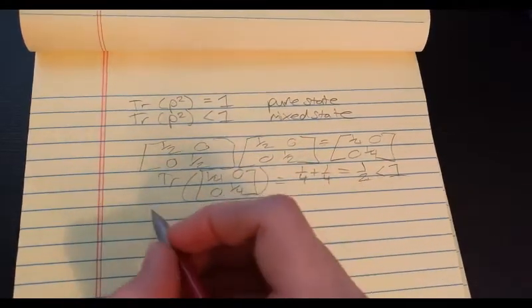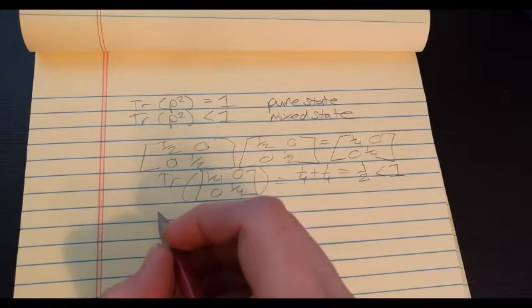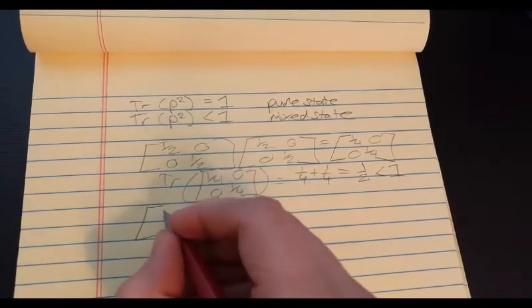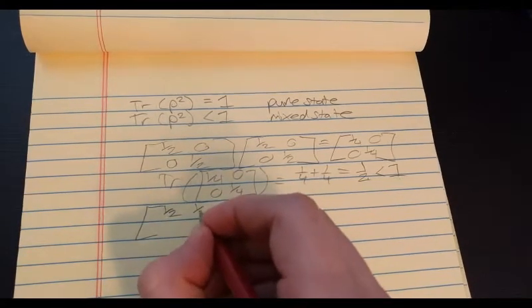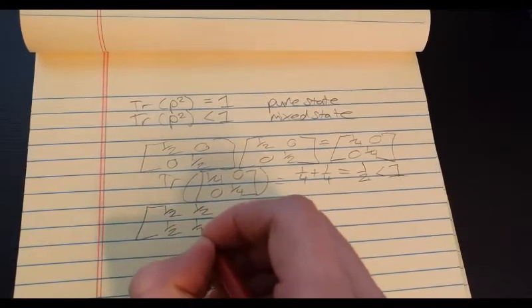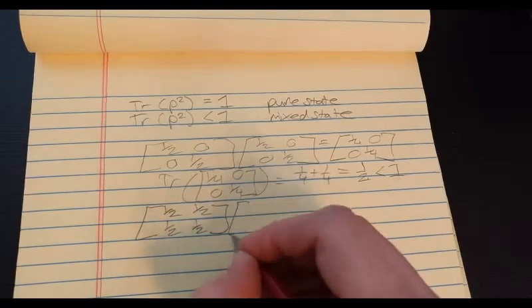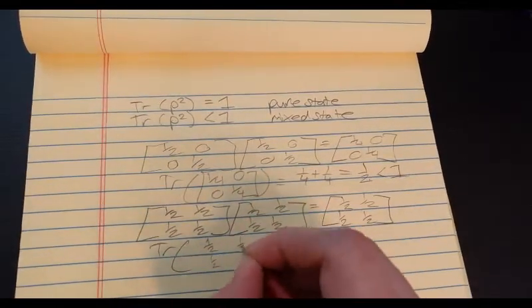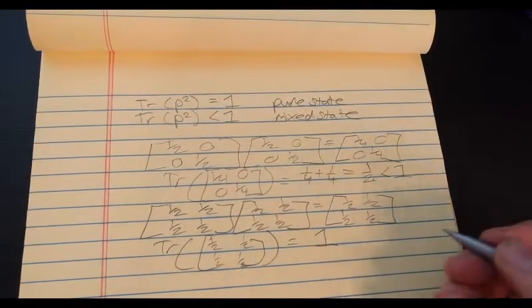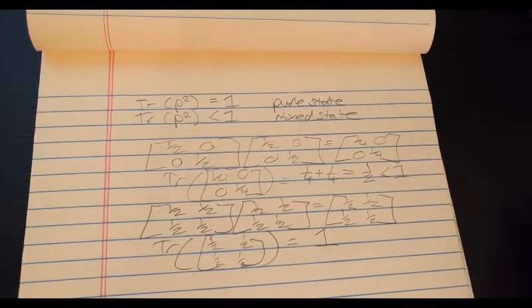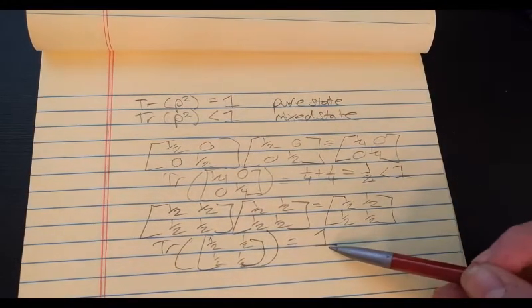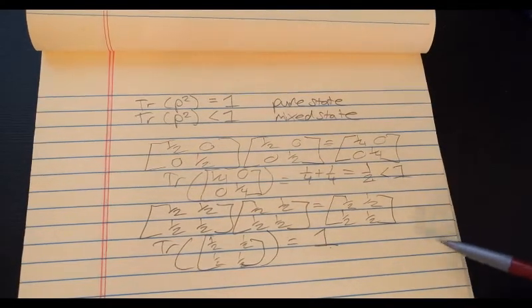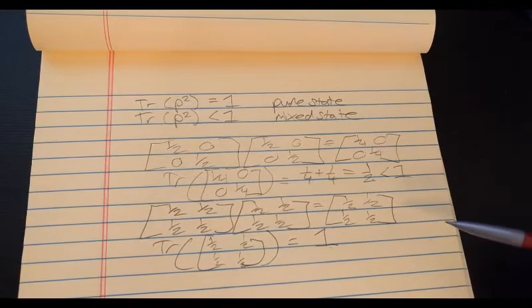And if you take the case of the diagonally polarized light, which can be represented by the matrix with a half, which is all the elements, you get one. So, diagonally polarized light would be a pure state, because it can be represented by a single vector.